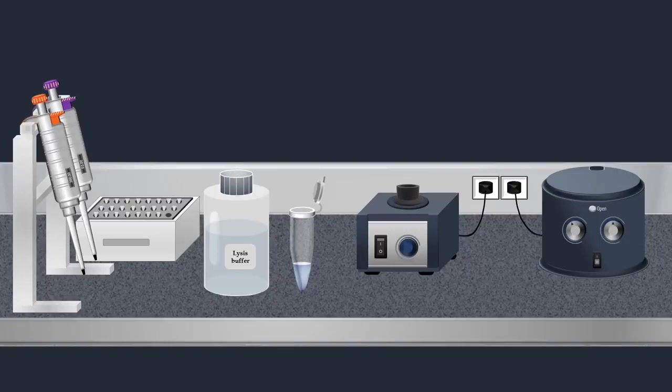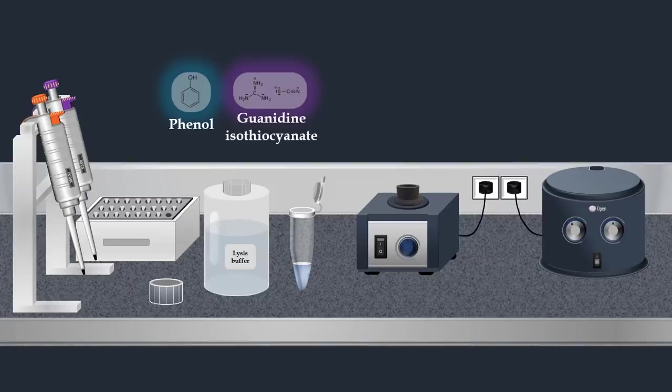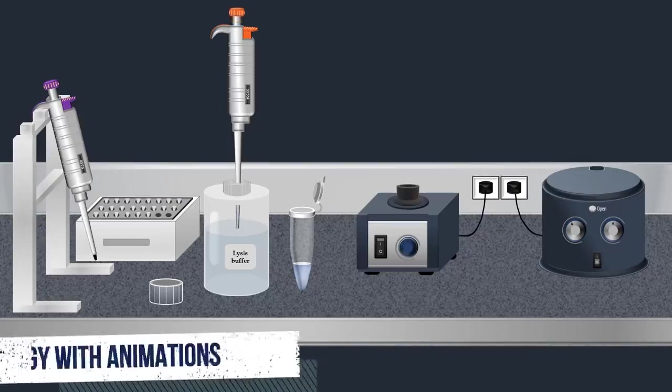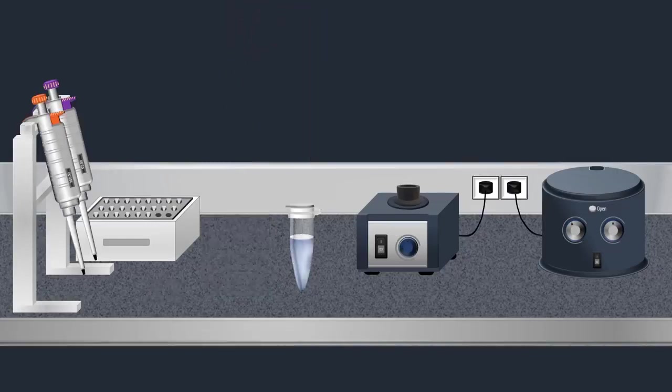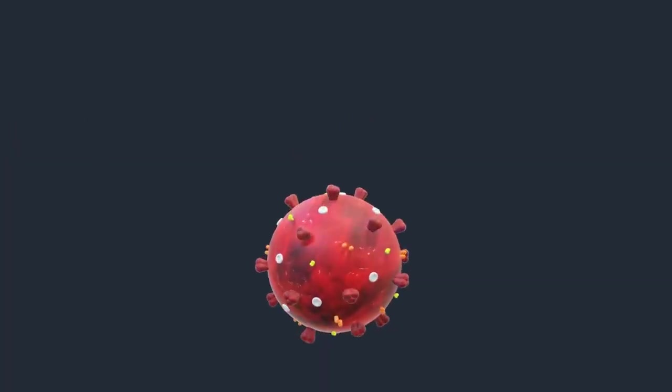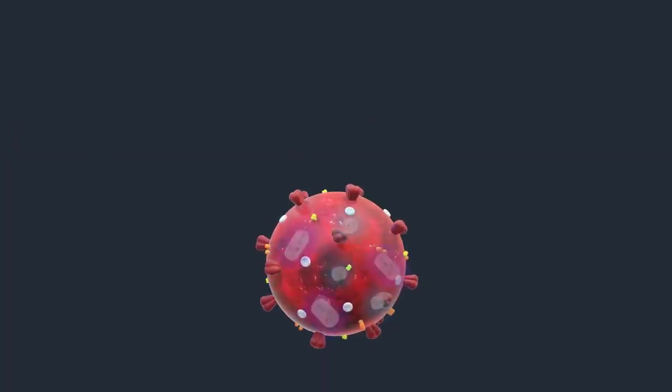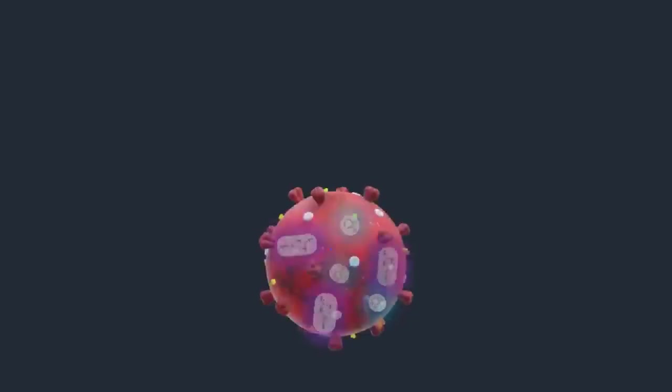This buffer is highly denaturing and usually consists of phenol and guanidine isothiocyanate. Also, RNase inhibitors are usually present in the lysis buffer to ensure isolation of intact viral RNA. Once the lysis buffer is added, the tube is mixed by pulse vortexing and incubated at room temperature. Then the virus is lysed under the highly denaturing conditions provided by the lysis buffer.